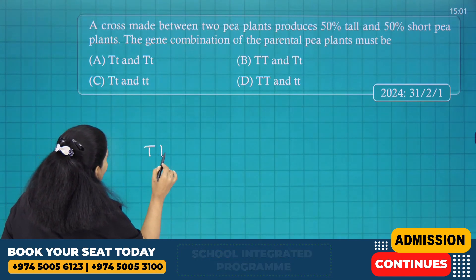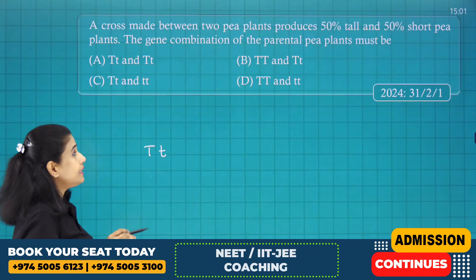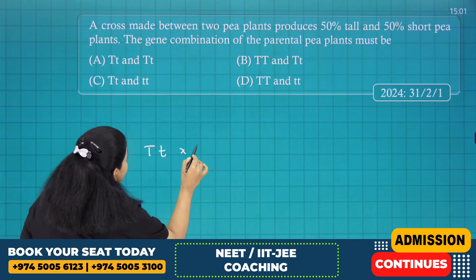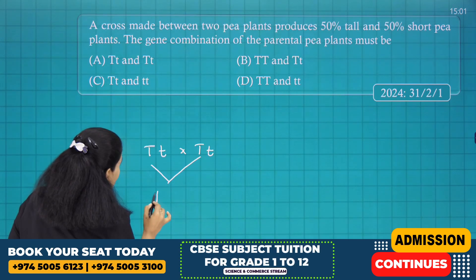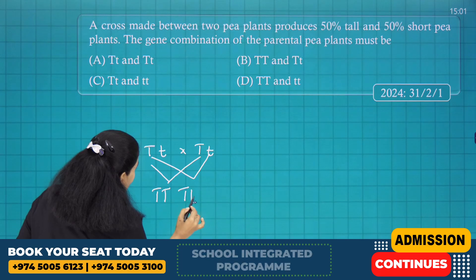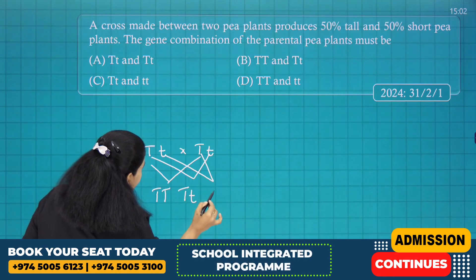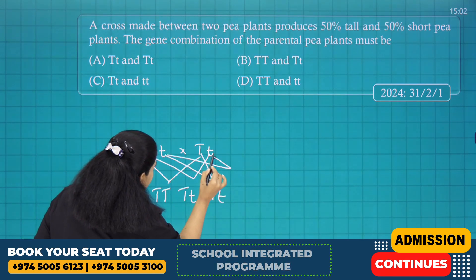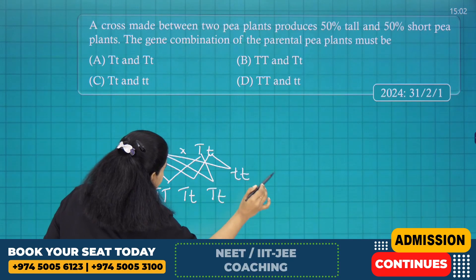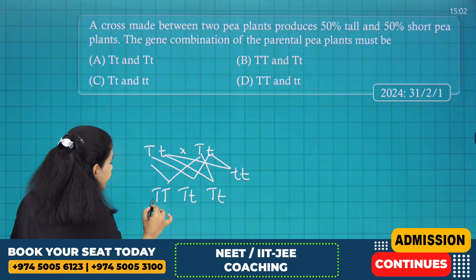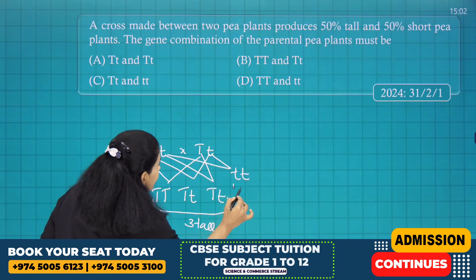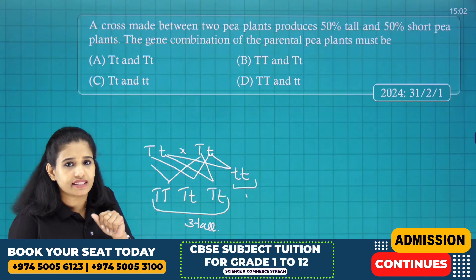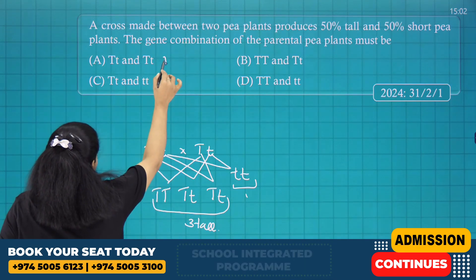Option A: Tt × Tt. Doing this cross gives TT, Tt, Tt, tt — so we get three tall and one dwarf, which is a 3:1 ratio. But the question requires 50% tall and 50% short, so option A is wrong.